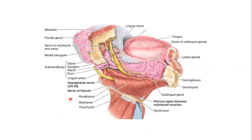Here you can see again — I want to show you — this is the mylohyoid muscle. You see this pointer moving, and this is the mylohyoid muscle forming the floor of the submental triangle. So this is a median line, this is the symphysis menti, and the floor is formed — the floor of the mouth — formed by the mylohyoid muscle. One muscle forming the floor of the mouth is the mylohyoid.